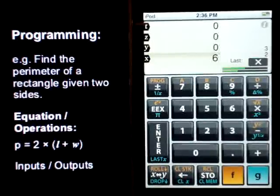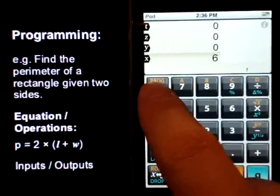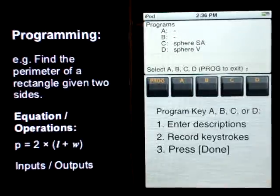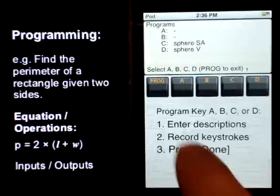We're going to do a similar thing in our program. Let's go into programming mode with fprog for programming. There's two programs available. We're going to select A. We're going to enter some descriptions, record some keystrokes, and then press done.